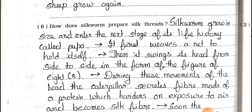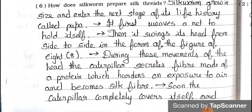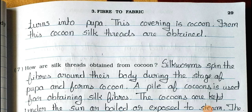Now see question number 6: How does a silkworm prepare silk threads? Answer: The silkworm grows in size and enters the next stage of its life history called pupa. It first weaves a net to hold itself. Then it swings its head from side to side in the form of a figure of 8. During these movements of the head, the caterpillar secretes fiber made up of a protein which hardens on exposure to air and becomes silk fiber. Soon the caterpillar completely covers itself and turns into pupa — this covering is the cocoon. From this cocoon, silk threads are obtained.